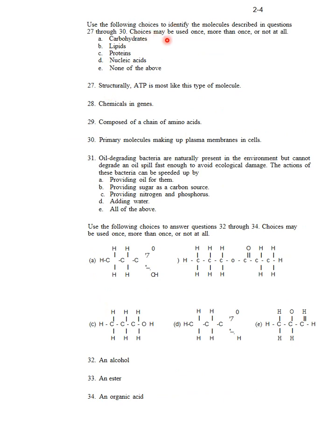Use the following choices to identify the molecules described in questions 27 through 30. Choices may be used once, more than once, or not at all. So choices are: carbohydrates, lipids, proteins, nucleic acids, or none of the above. First question: Structurally, ATP is most likely this type of molecule. ATP is nucleic acid. Composed of a chain of amino acids - the answer is proteins. Primary molecules making up plasma membranes in cells - lipids are responsible for plasma membranes.